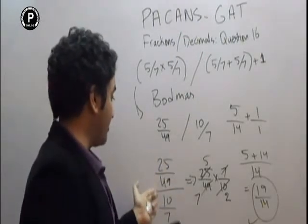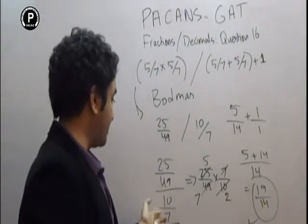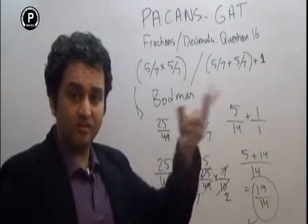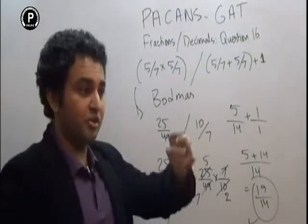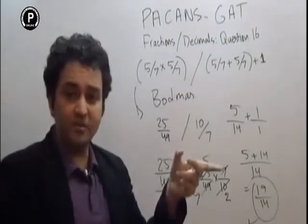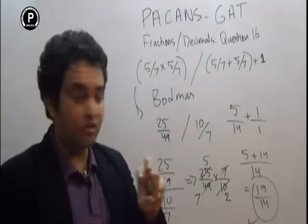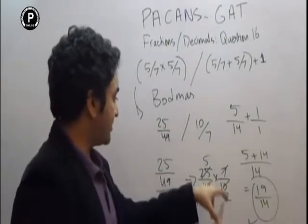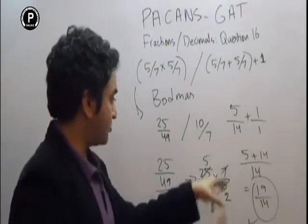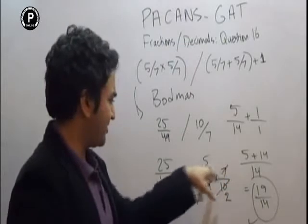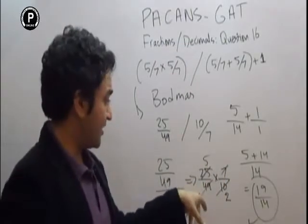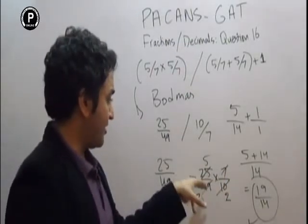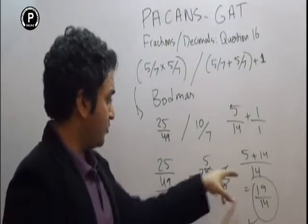25 over 49 divided by 10 over 7 — the divisor goes up and flips. So the denominator goes into the denominator, and the numerator goes into the numerator and denominator: 25 over 49 times 7 over 10. We simplify and cut from 49, leaving 5, 2, 5 — which gives 5 over 14.